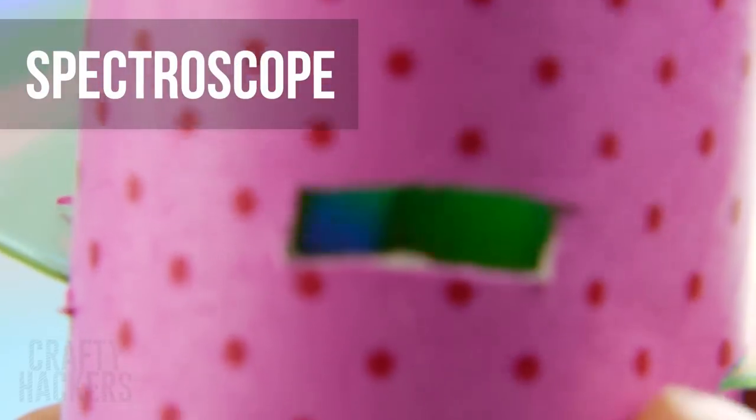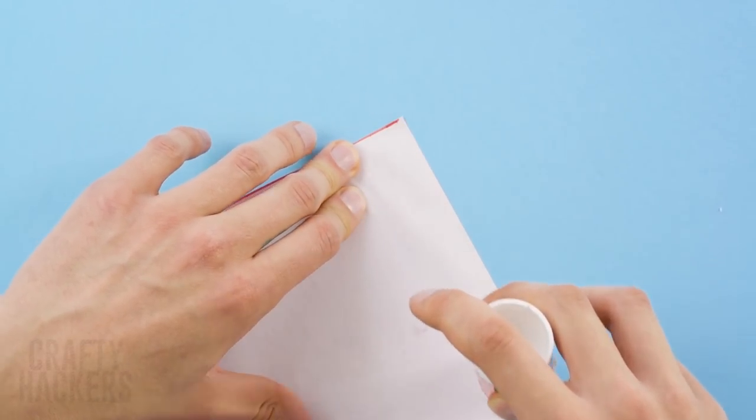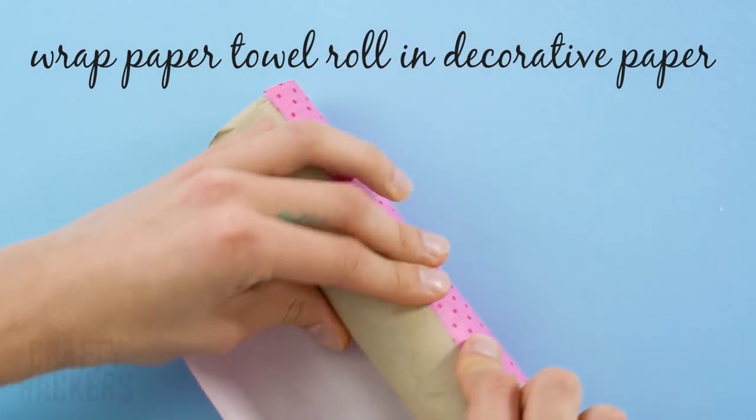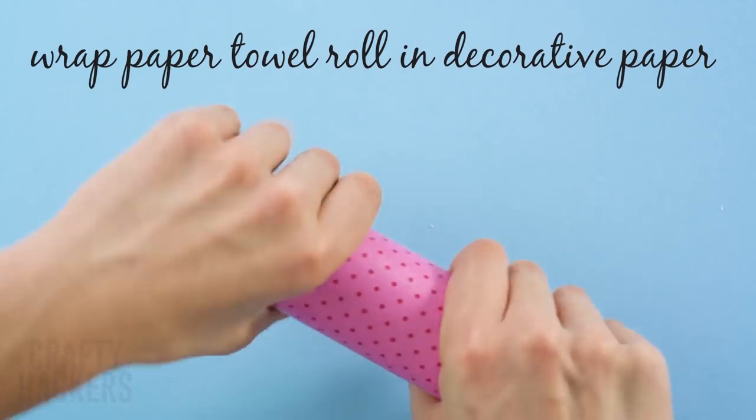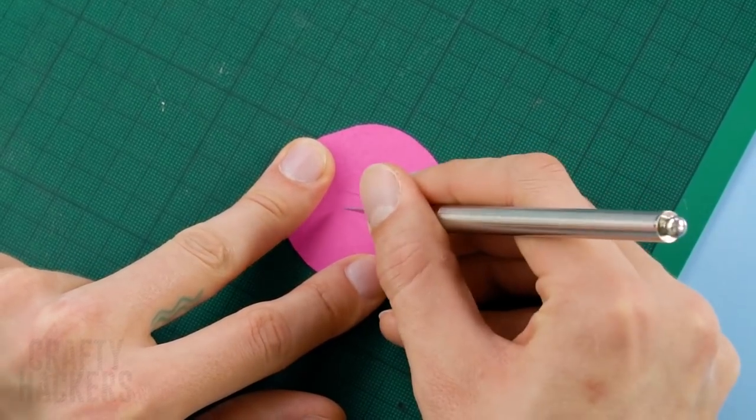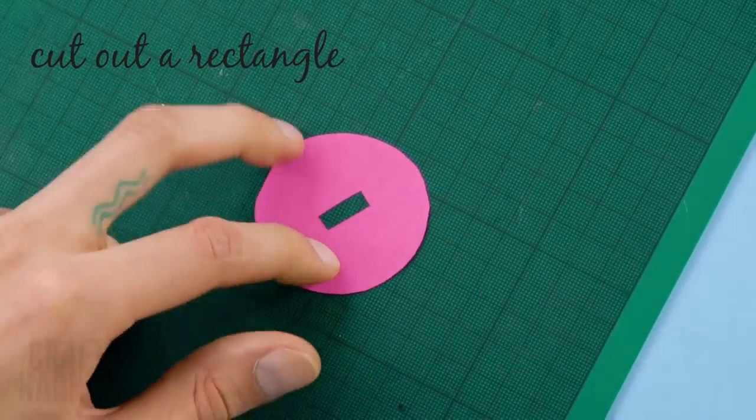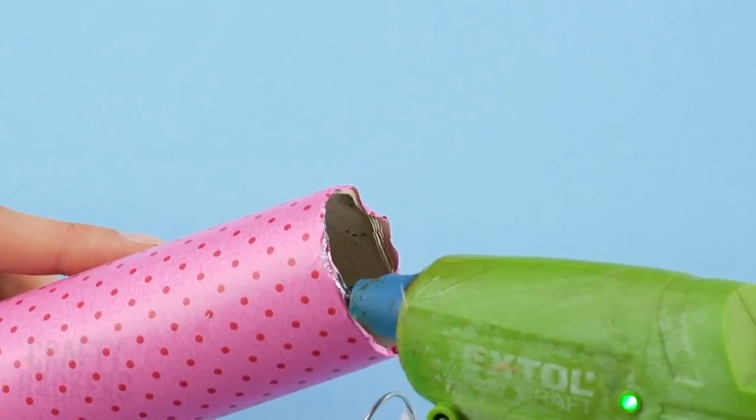Spectroscope. Spectroscopes are used to study stars. They work by separating the white light from a star into a wide spectrum of colors. Wrap the tube from a paper towel roll in some decorative paper. Next measure the end of the scope on a piece of construction paper. Cut out the circle. Then with an exacto knife, cut out a rectangle out of the center of the circle. Glue the circle to the end of the tube.